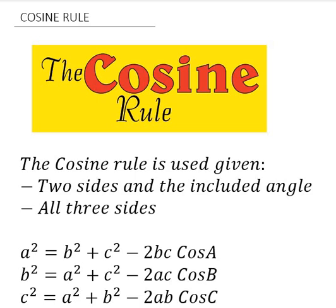The cosine rule has a formula. As you can see on the screen, the cosine rule is used when you are given two sides and the included angle, or when all three sides of the triangle are given. You can use the cosine rule — it is very simple.